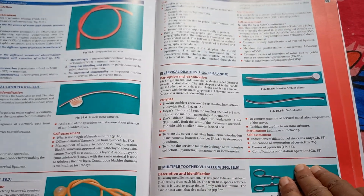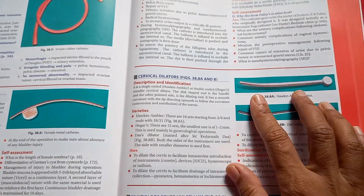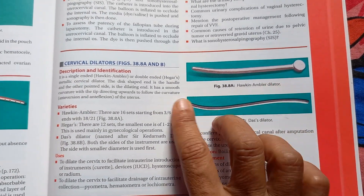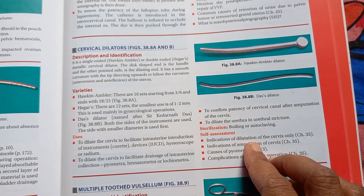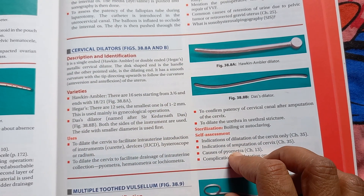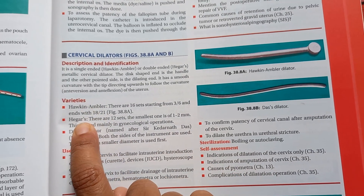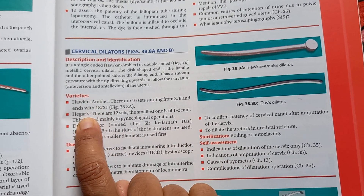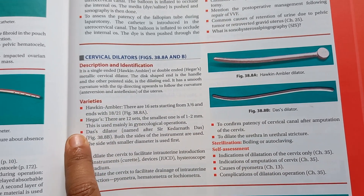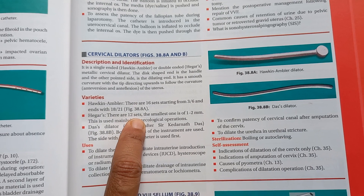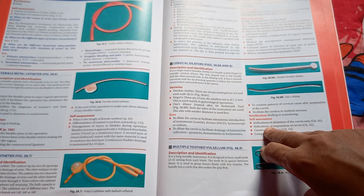All the instruments are shown here. This is Hegar's dilator — cervical dilators. There are 12 sets, which is what we know and use in practice.